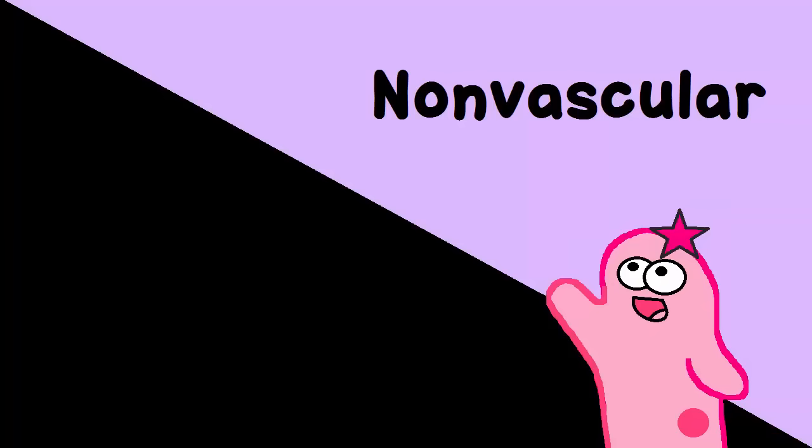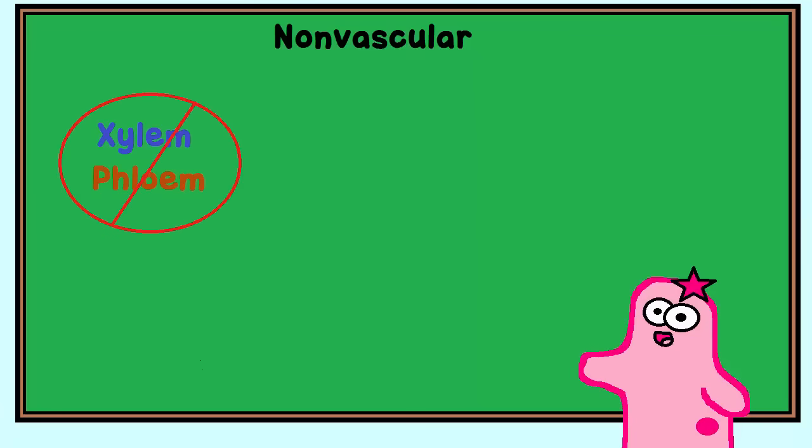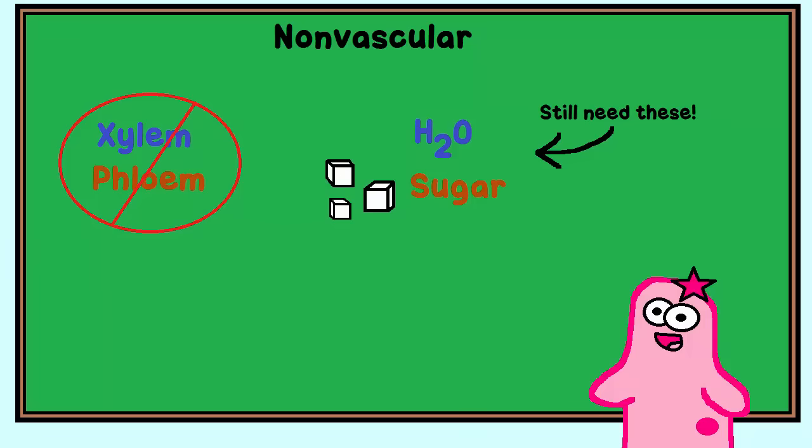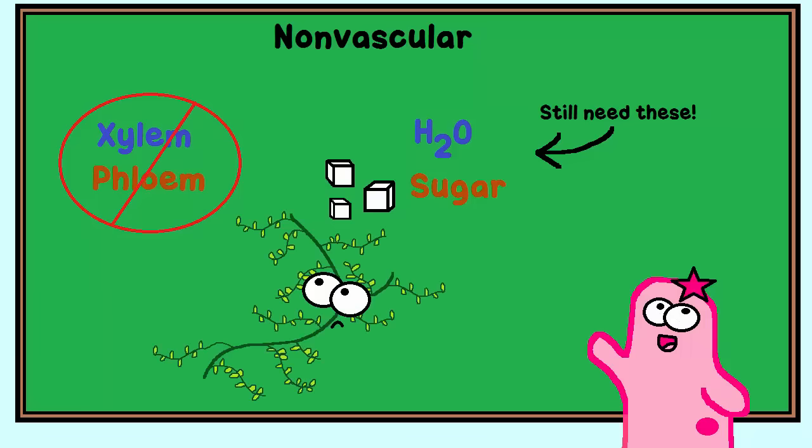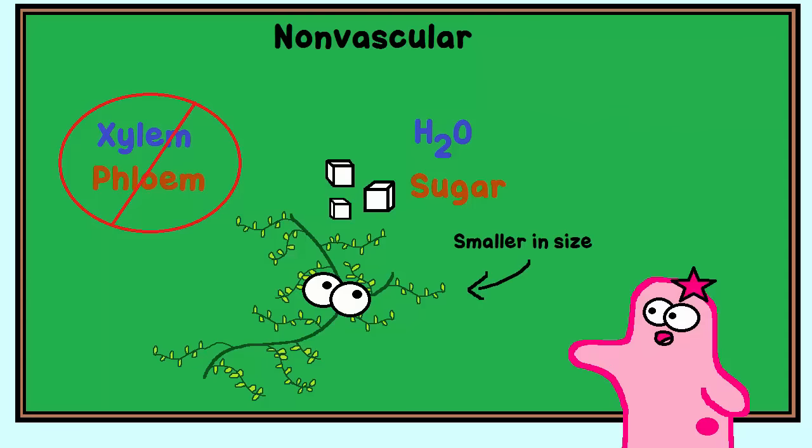If a plant is non-vascular, it does not have vessels like the xylem and phloem. However, it still needs water, and it still produces sugar. It can't carry water upwards in the xylem because it doesn't have one. That means non-vascular plants typically are limited in size.